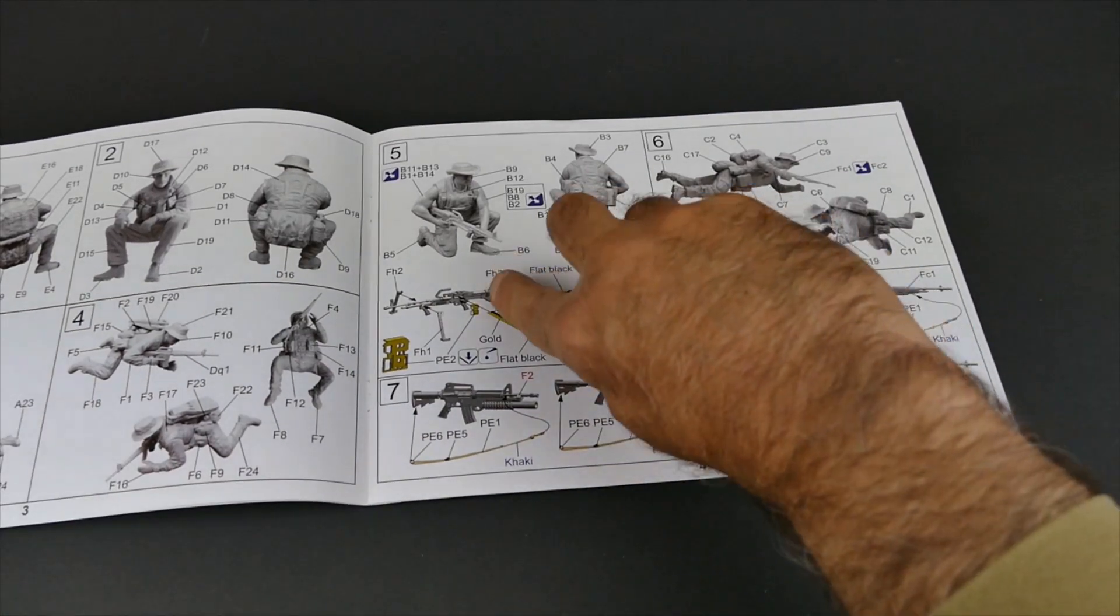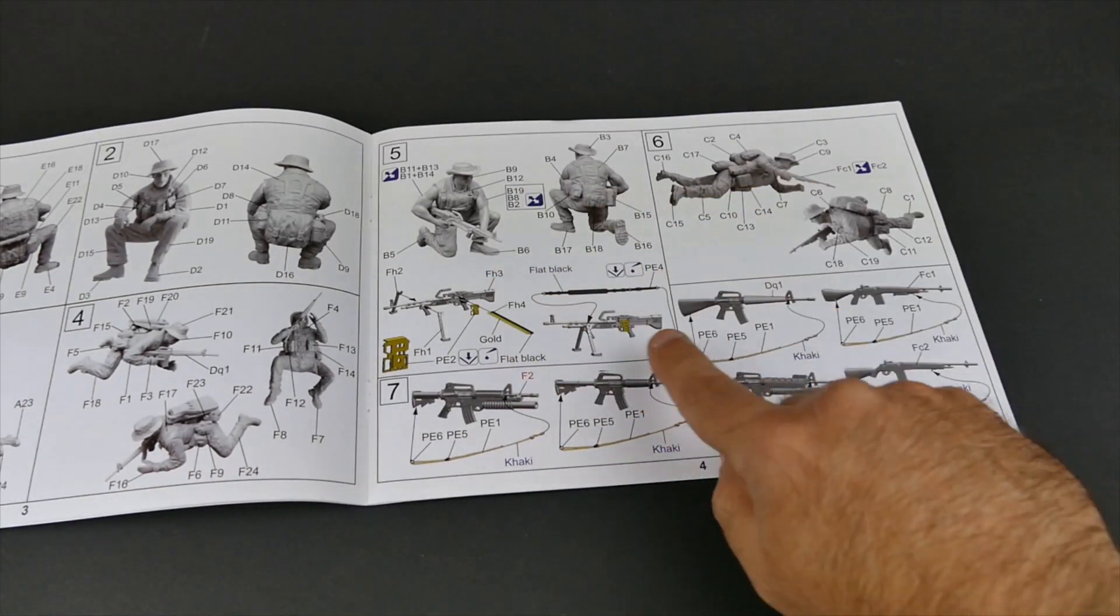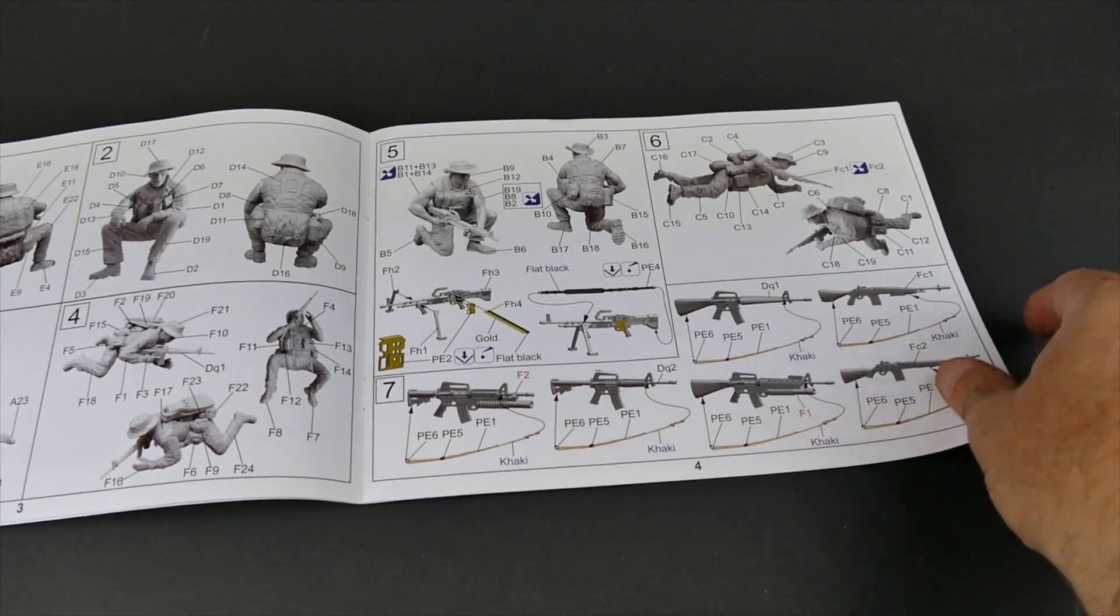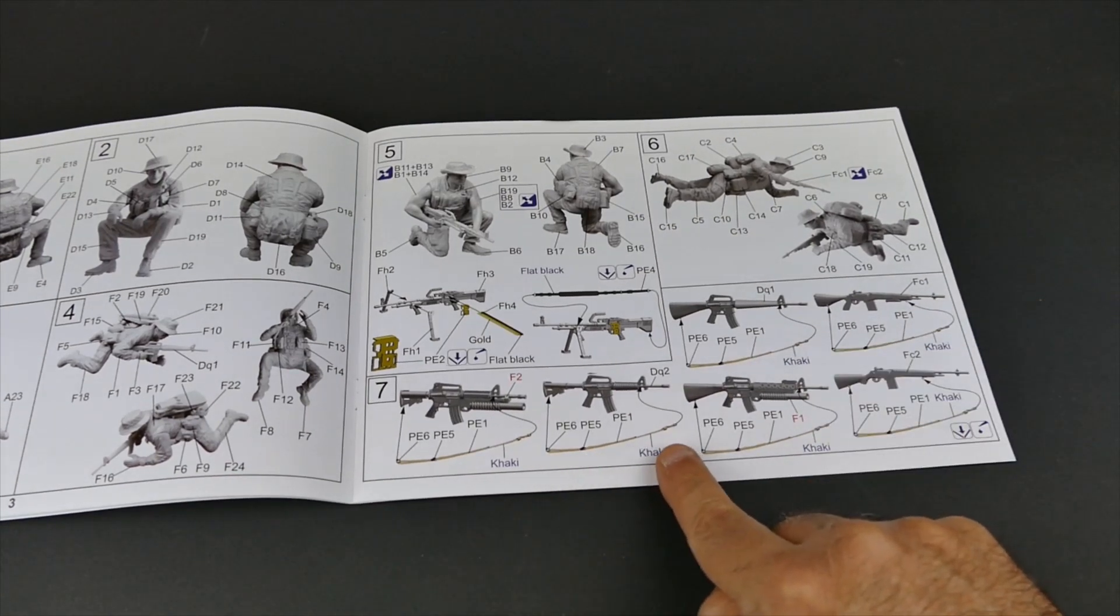Again, they show how to use your photo etch to bend, and you know, weapon straps to use here.